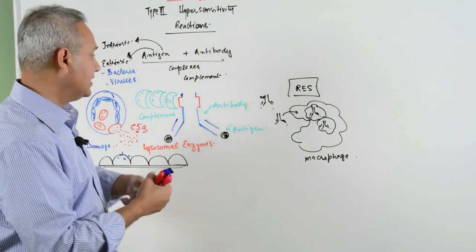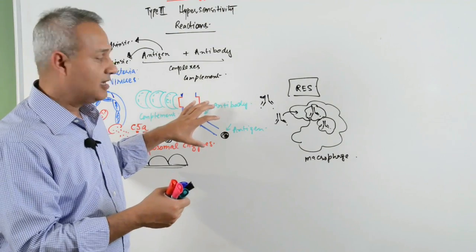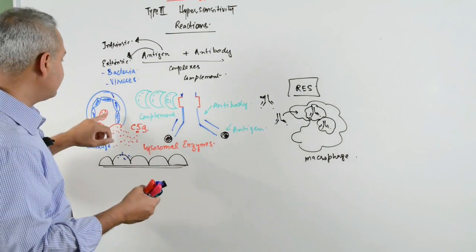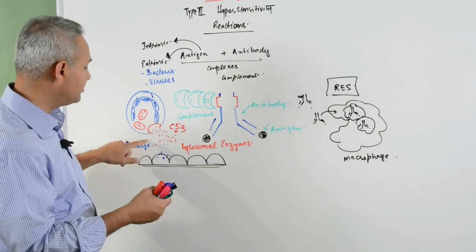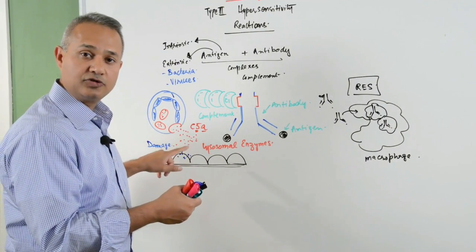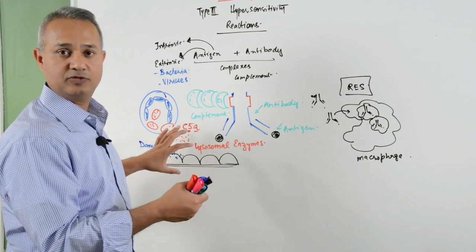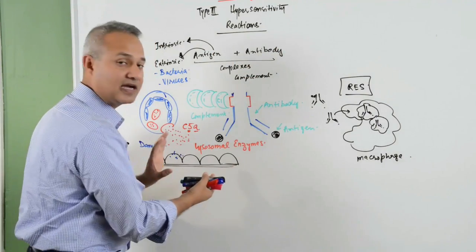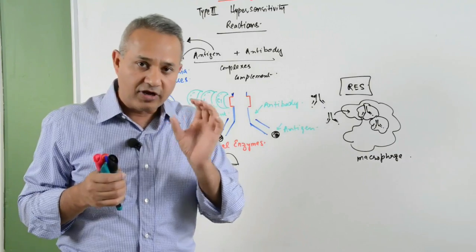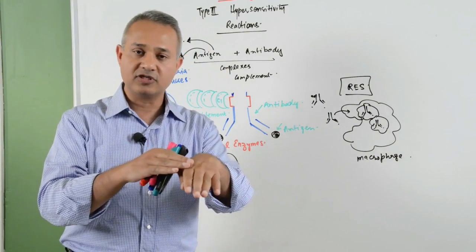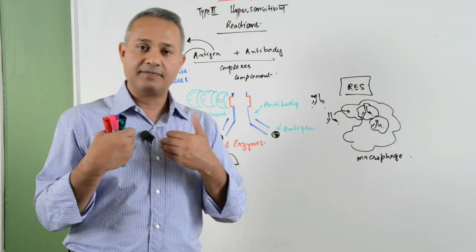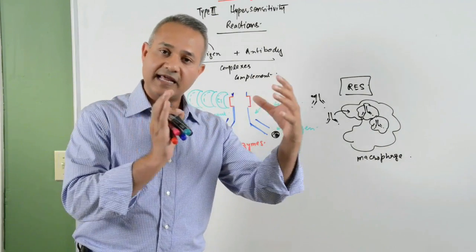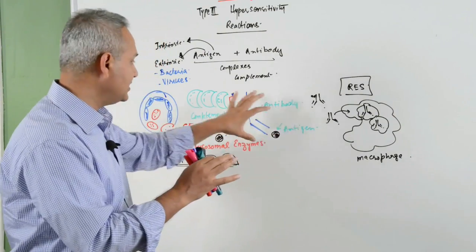Now we are clear why there are floating complexes, why these are not cleared, what these do. The complex causes complement activation, which causes inflammatory reaction in that area. Inflammation causes neutrophils to come in, which causes lysosomal enzymes to be released and local damage to occur. Keep this in mind: in all pathologies related to type 3, the same mechanism occurs. The only difference is where the mechanism is happening - on the skin, kidneys, cardiac or pulmonary surfaces, or joints. Wherever that happens, that is where symptoms appear, but the mechanism is the same.